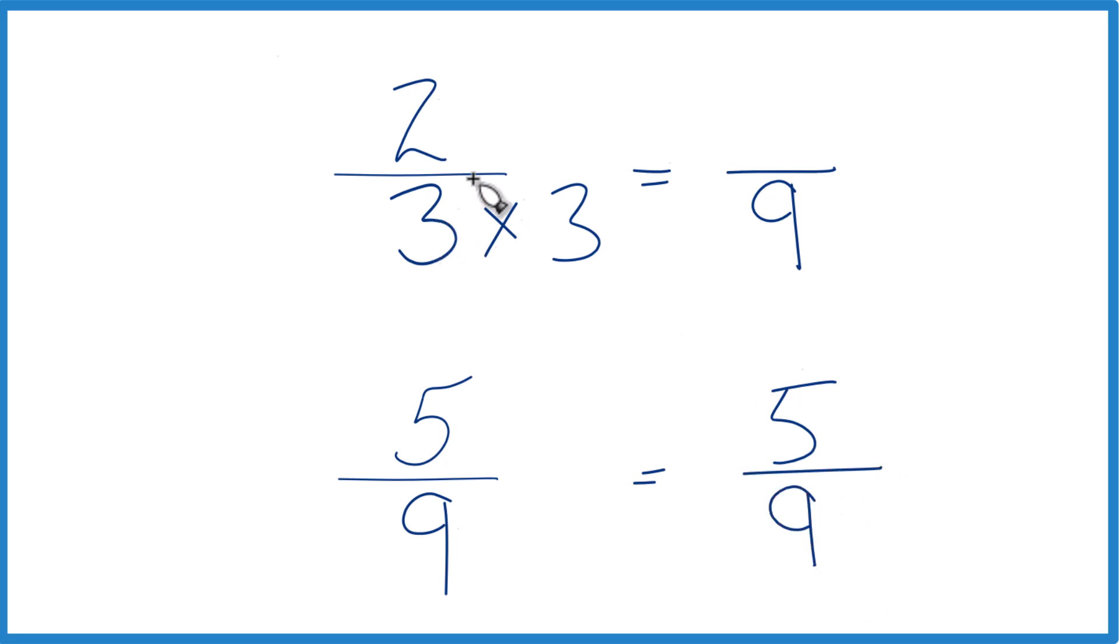We can't just multiply the denominator by three. We do need to multiply the numerator by three as well. That's because three over three, that's one. We're multiplying by one. We don't change the value, just the way it's represented. Two times three, that's six. And six-ninths, that's an equivalent fraction to two-thirds and the same value.